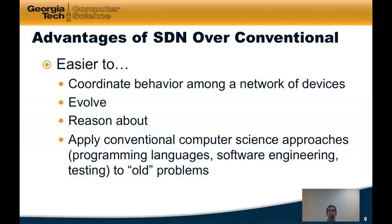Going back to that picture where we talked about vertical integration, it's very tough to evolve because the software is bundled with the hardware and whatever features are also bundled with that. If we break that apart, as we do with SDN, we can evolve the control plane — the software that controls the network behavior — much more easily, because you've decoupled it from the underlying network devices.